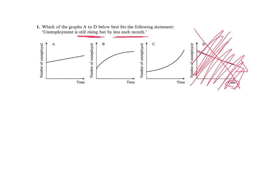So now we look, and on the left here we have a line that's going up, but it's going up the same amount each month, a straight line. So every day one more person is unemployed. The next day another person. The next day one more. On and on forever. So that's not it because it says less each month. It's slowing down.